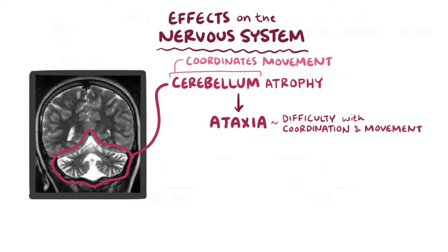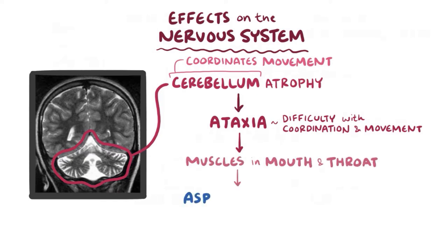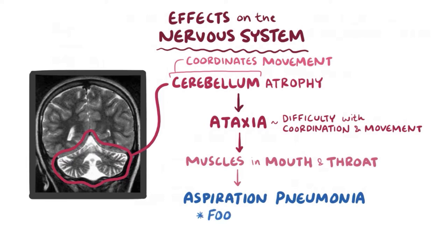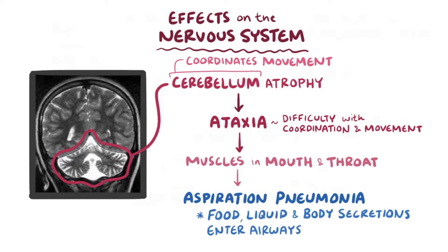In many cases, the ataxia can lead to the muscles in the mouth and throat not coordinating, which can cause aspiration pneumonia — that's where bits of food, liquid, and body secretions are able to get into the airways and cause direct damage as well as infection in the lungs.